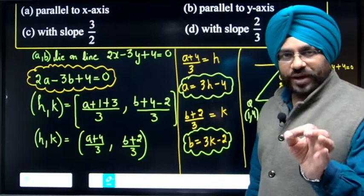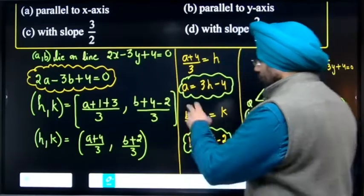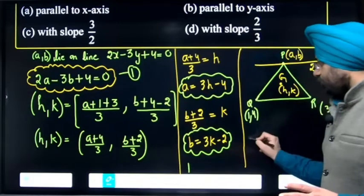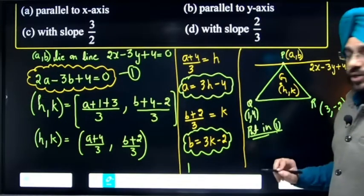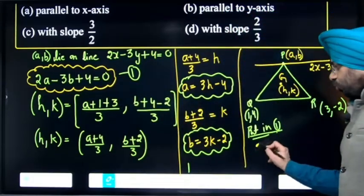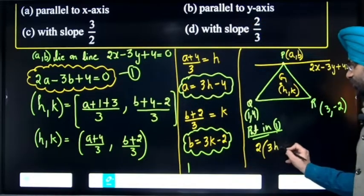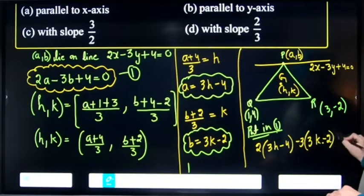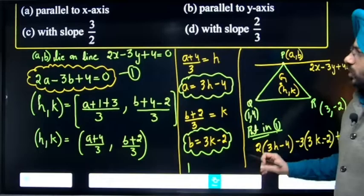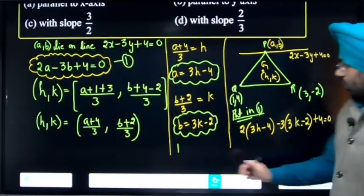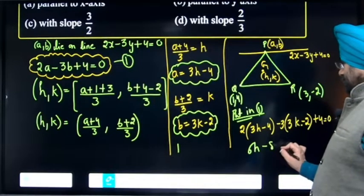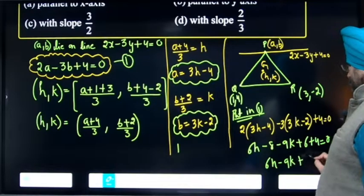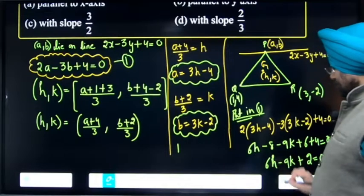Now put the values of a and b into equation one: 2 times (3h minus 4) minus 3 times (3k minus 2) plus 4 equals 0. Simplifying: 6h minus 8 minus 9k plus 6 plus 4 equals 0. This gives 6h minus 9k plus 10 minus 8 equals 0, so 6h minus 9k plus 2 equals 0.